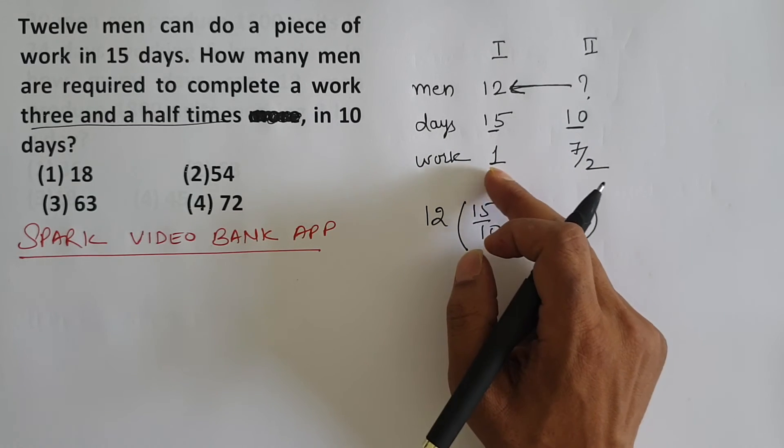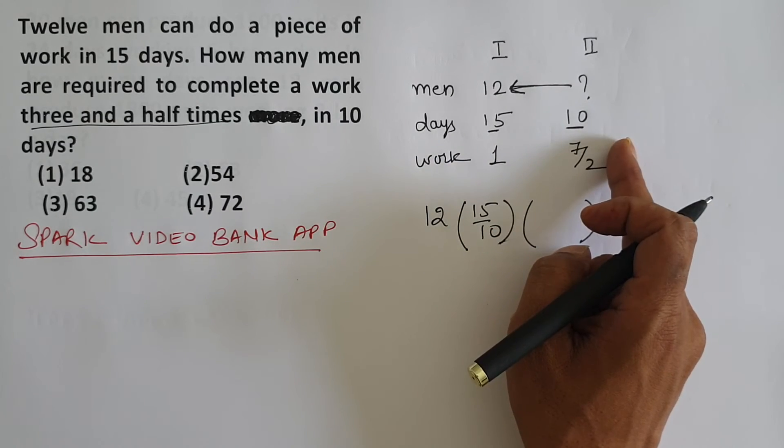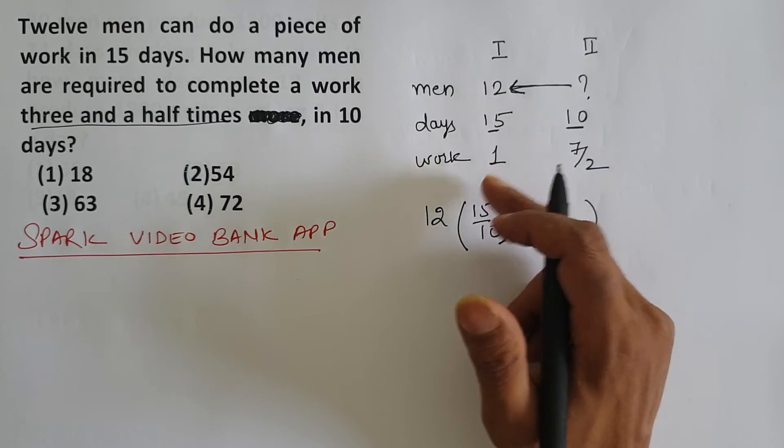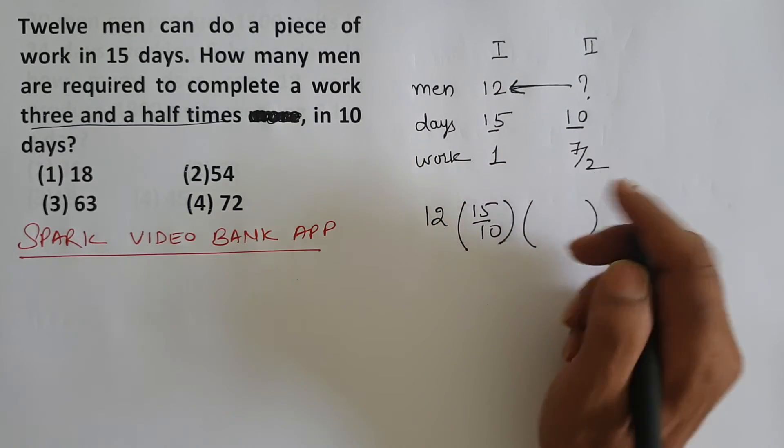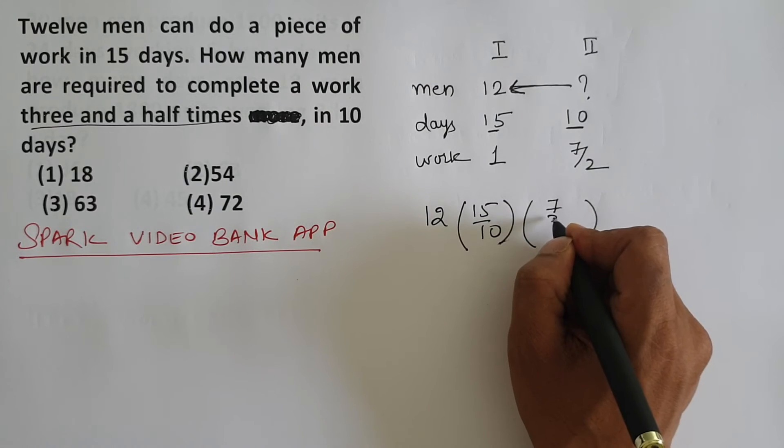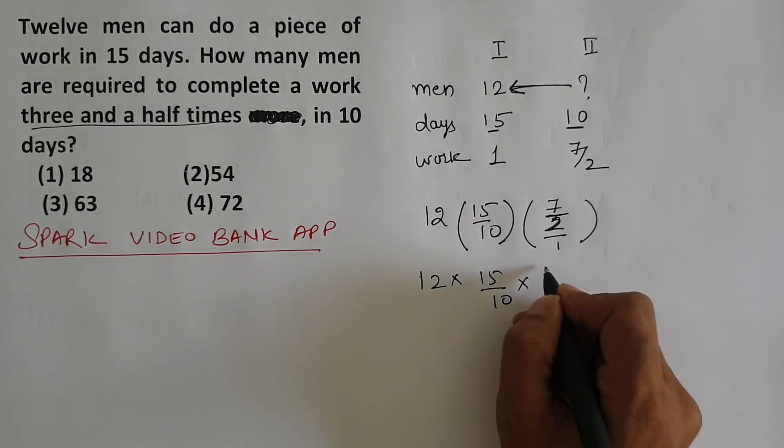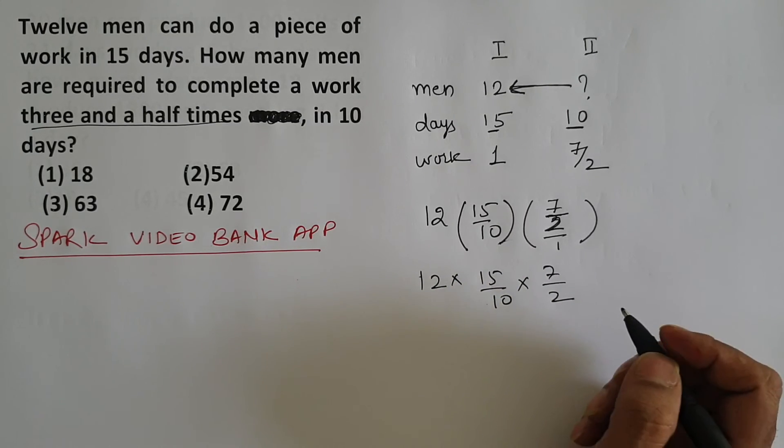Now there's more work. Earlier work was less, now work is more. If it's more, then men will have to be increased further. To increase men, numerator big denominator small, so 7 by 2 upon 1. So that is, how much will it be - 12 into 15 by 10 into 7 by 2.